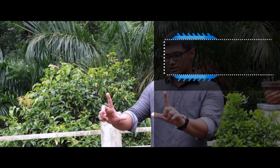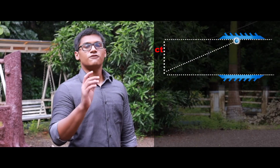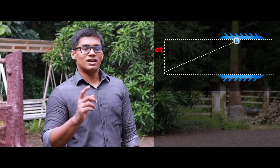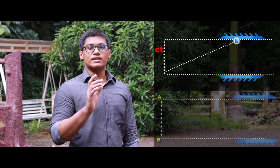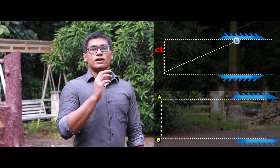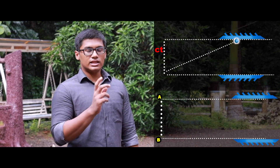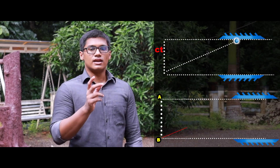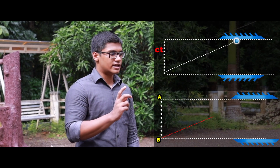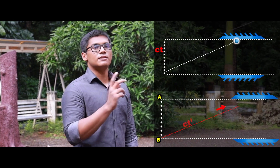The distance travelled by the photon is equal to ct, where c is the speed of light. Now let's change the frame of reference. When we look from outside the system, we can see that the path travelled by the photon is longer. At this frame of reference, let's represent the time as t prime. So the distance travelled by the light can be considered as ct prime.